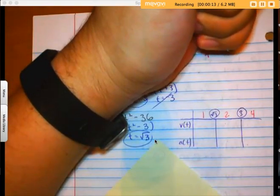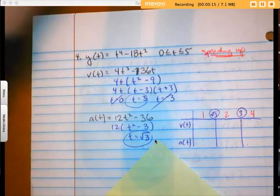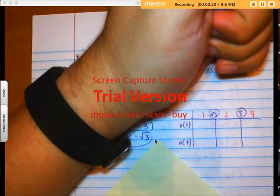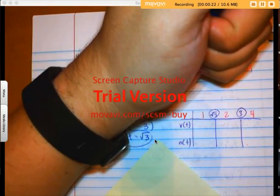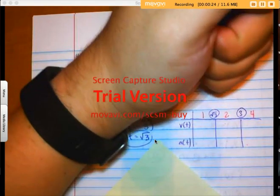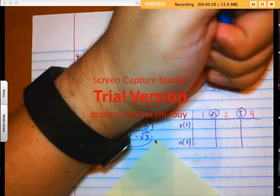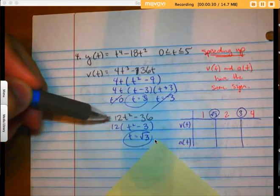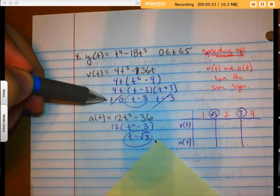And you recall speeding up when v(t) and a(t) have the same sign. So I've done some algebra already. I've taken the derivative and the derivative, and I've found when v(t) is equal to 0 and a(t) is equal to 0.